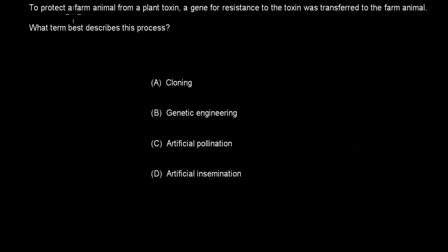Question 2: To protect a farm animal from a plant toxin, a gene for resistance to the toxin was transferred to a farm animal. What term best describes this process? A. Cloning, B. Genetic engineering, C. Artificial pollination, or D. Artificial insemination. Pause the video and attempt the question.